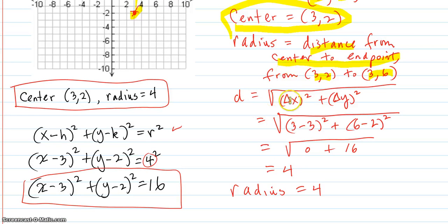So the distance formula is the change in x quantity squared plus the change in y quantity squared. So it's 3 minus 3 is the delta x, and 6 minus 2 is the delta y. So that's 0 plus, and that's 4 squared is 16. The square root of 16 is 4, so the radius is 4.